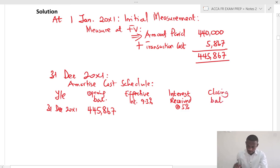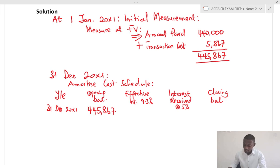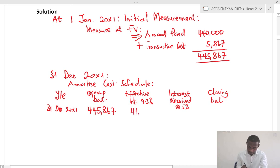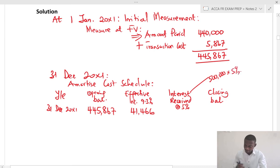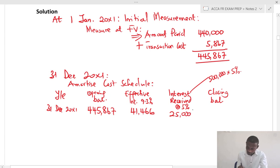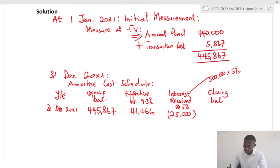The effective interest is 445,867 × 9.3%, giving us 41,466. The cash interest received is based on the nominal value of 500,000 times the coupon rate of 5%, giving us 25,000. So the closing balance is 445,867 plus 41,466 minus 25,000, which gives us 462,333.